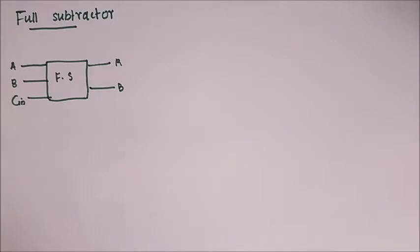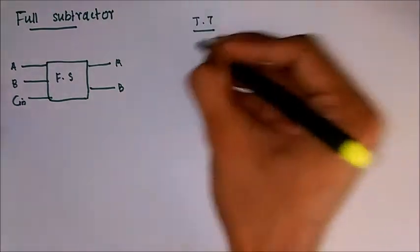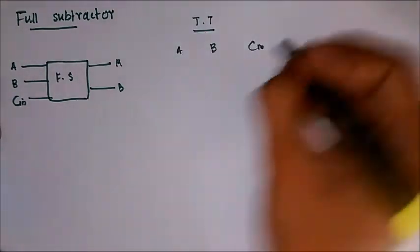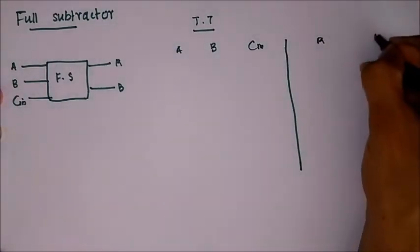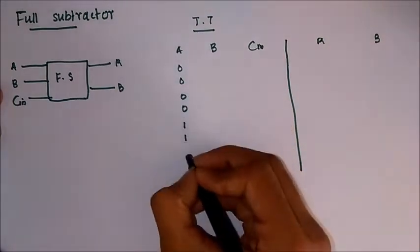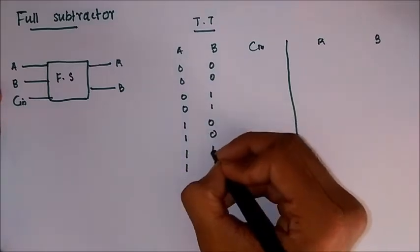It's not combination of these, so let's move on to the truth table. Now there are three inputs so eight combinations will be there: A, B, and 0 0 0, 0 1 1, 1 0 0, 1 1...